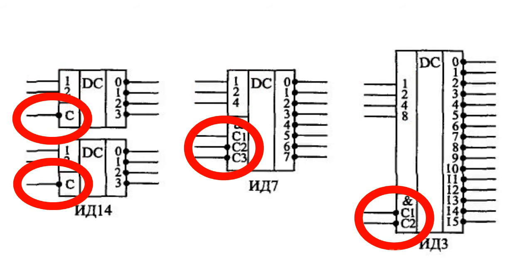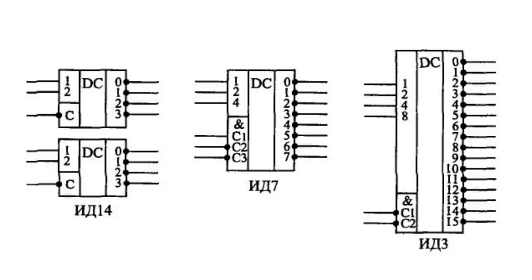C1, C2, C3 inputs are permission inputs united under AND function. The signal at these inputs determines the time of decoder actuation. Permission inputs can also be used to raise the digit capacity of the input code.